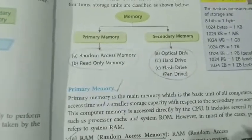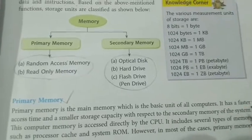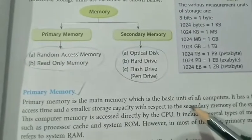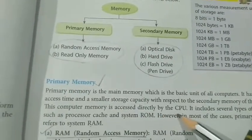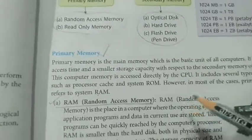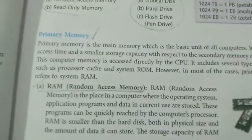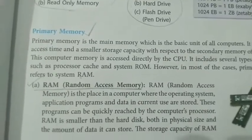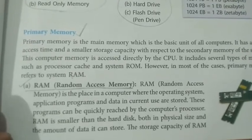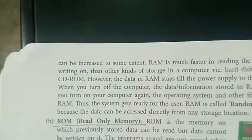Primary memory is the main memory, which is the basic unit of the computer. It has faster access time but smaller storage capacity compared to secondary memory. This memory is accessed directly by the CPU. RAM stands for Random Access Memory. RAM helps in loading the operating system during booting. The user can access RAM for various purposes; it is smaller in size, and various types of RAM with different capacities are available in the market. This RAM is removable — you can remove it and place a RAM of higher capacity.